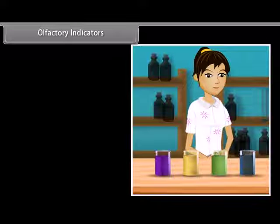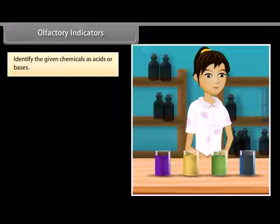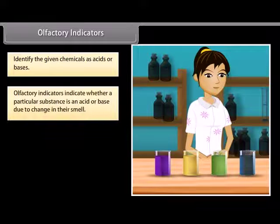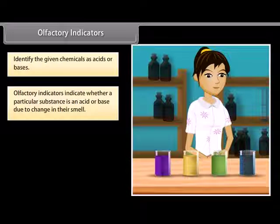Suppose you are given four chemicals and asked to identify them as acids or bases — how will you do it? Let us find out. We have olfactory indicators, which indicate whether a particular substance is an acid or base due to a change in their smell.